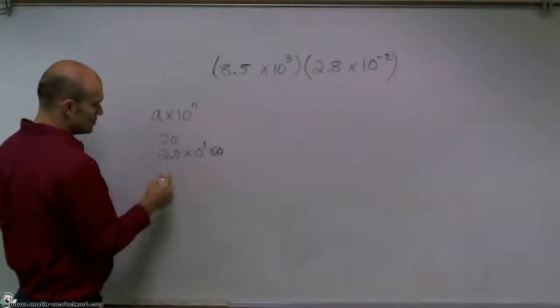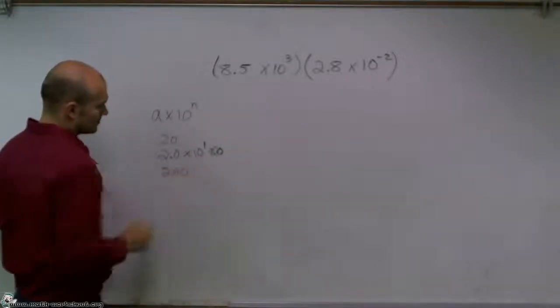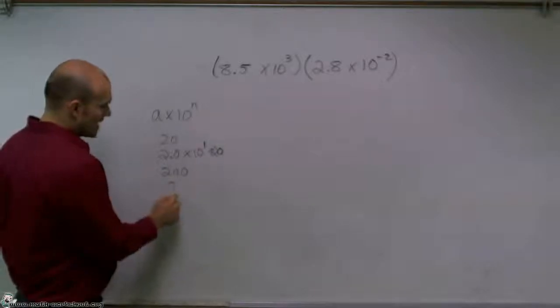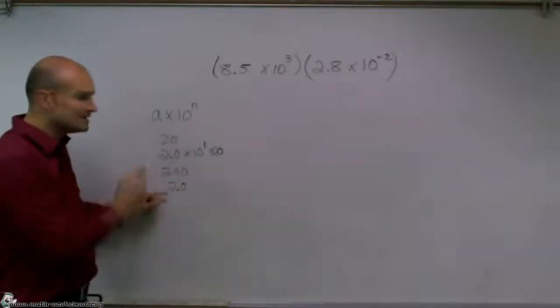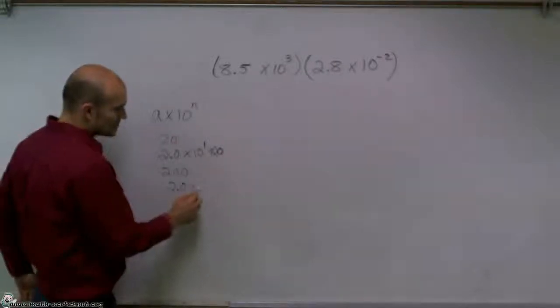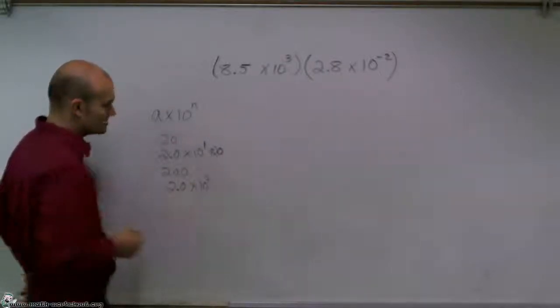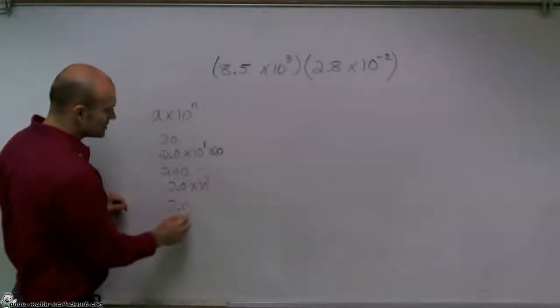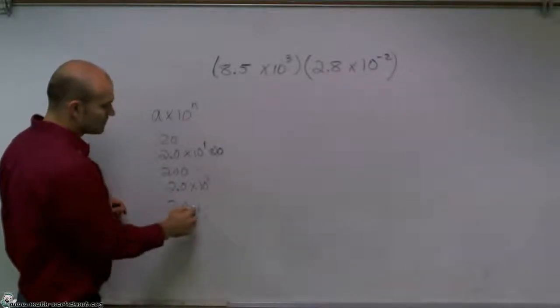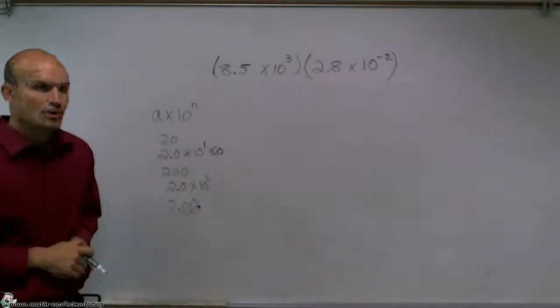If I wanted to write 200, I still have to write 2.0, because a has to be between 1 and 10, and then I'll write 10 to the second power. Now to get 200, I'll have to move my decimal point over 2 units, and that gives me 200.